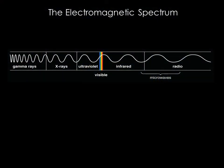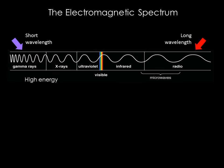This figure shows the way the electromagnetic spectrum is divided into regions according to wavelength, or equivalently frequency or energy, from short wavelength and high energy gamma rays on the left, all the way to long wavelength, low energy radio waves on the right.